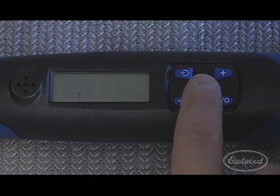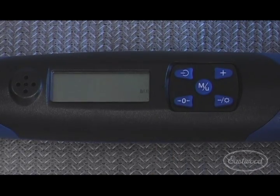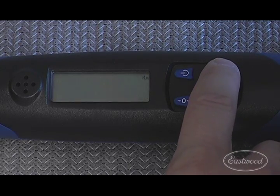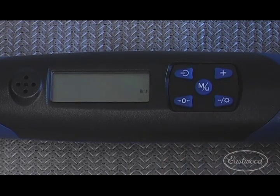Press the center button to confirm track mode and move to unit selection. Press the top right button to switch between units. We will use foot-pounds. Press center button to confirm.